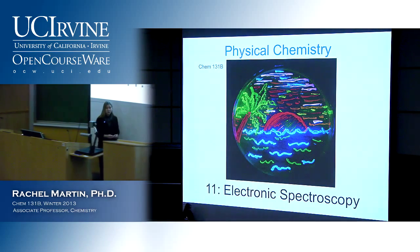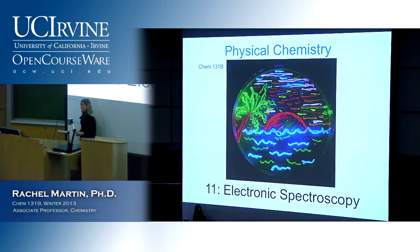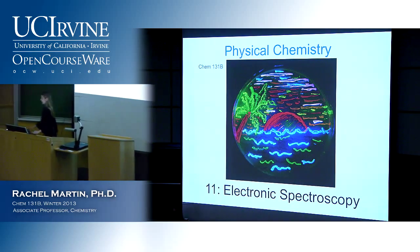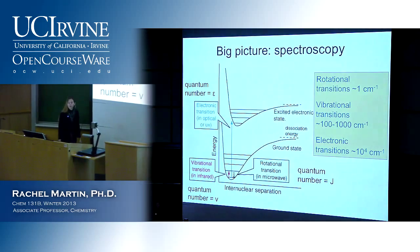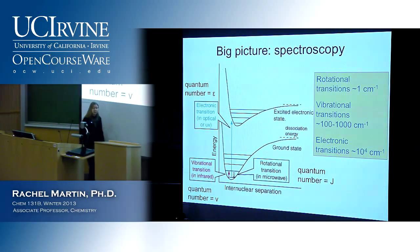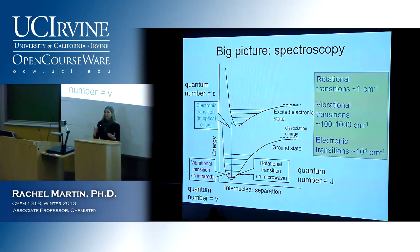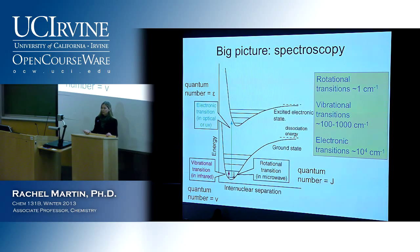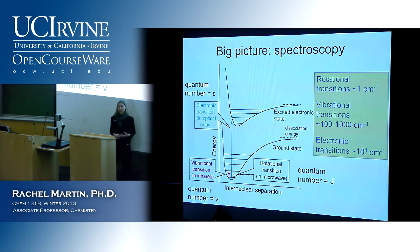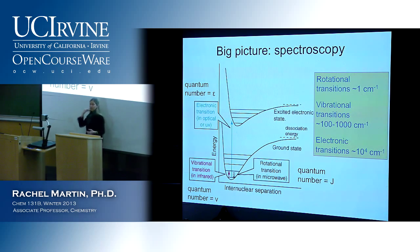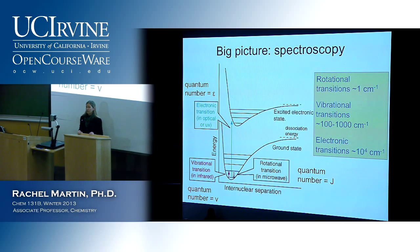Now we're moving on to electronic spectroscopy — this is chapter 11 in your book. Remember our big picture: we talked about the difference between rotations and vibrations, and now we're getting into electronic states. All of these things are on different energy scales.